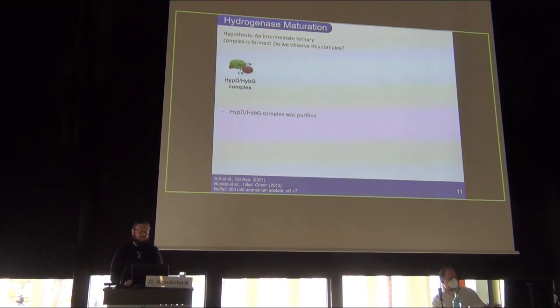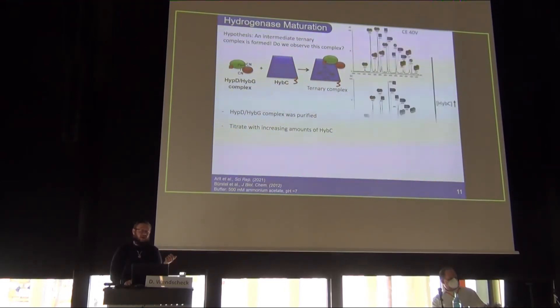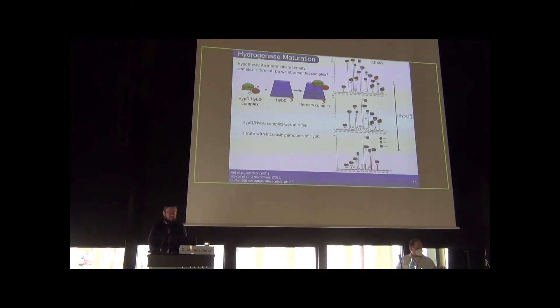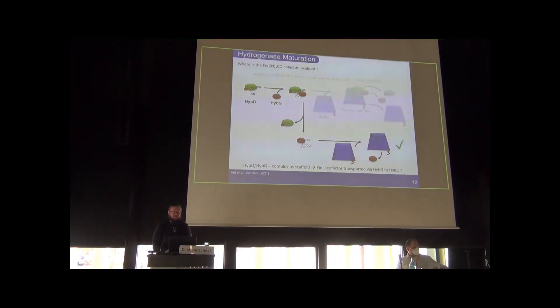We already had the co-purified HIP-D HIP-G complex, so we decided to add varying amounts or increasing amounts of the HIP-C protein and just look for the ternary complex. We measured these protein samples and what we found out was there's no indication of a ternary complex. At some point, we just see that the HIP-D HIP-G complex signal intensity is decreasing, and at the same time, we have signal intensity for a new complex, which is also a heterodimeric complex between HIP-G and HIP-C, which is now confirming more or less the second route of this assumption. We will have HIP-G as a delivering protein which just shuttles the created cofactor to HIP-C.